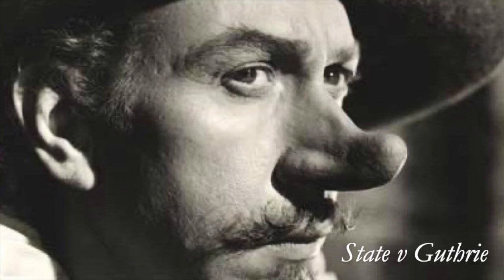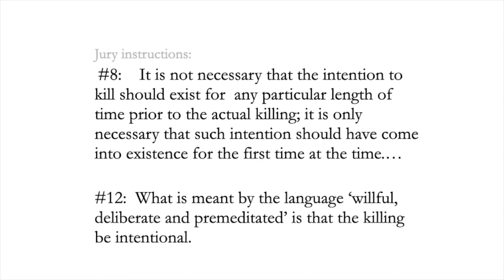The issue turns on the jury instructions. On the critical question of premeditation, the jury was told: it is not necessary that the intention to kill should exist for any particular length of time prior to the actual killing; it is only necessary that such intention should have come into existence for the first time at the time of killing. What is meant by willful, deliberate, and premeditated is that the killing be intentional. The Guthrie court held that these instructions, given over objection, constituted reversible error. They might lead the jury to confuse intent to harm — sufficient to establish malice aforethought — with premeditation. A spontaneous and unreflective killing would be no more than murder in the second degree, even if intentional.